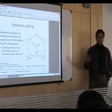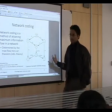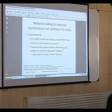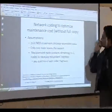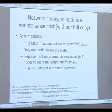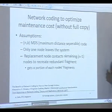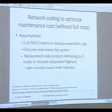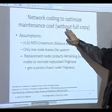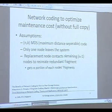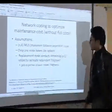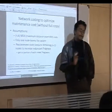Using network coding schemes, you can achieve the capacity of a network. Now, if I want a system where I am storing N fragments, out of which any K is enough to reconstruct the data, but I do not want to store the full copy of the original object — then if I have to do maintenance, this work assumes that only one node leaves at a time.